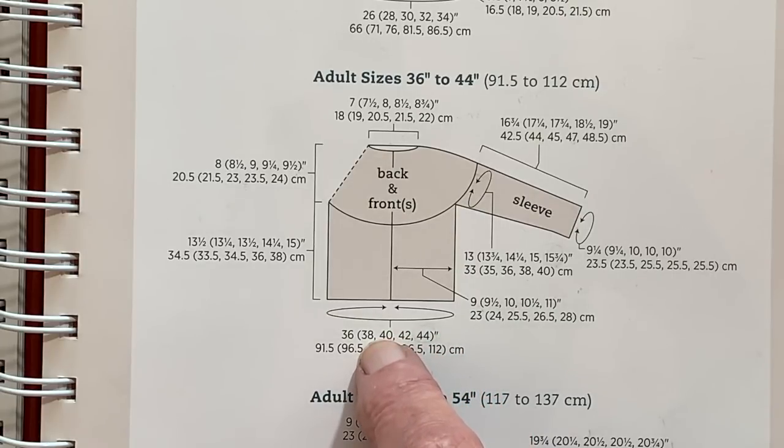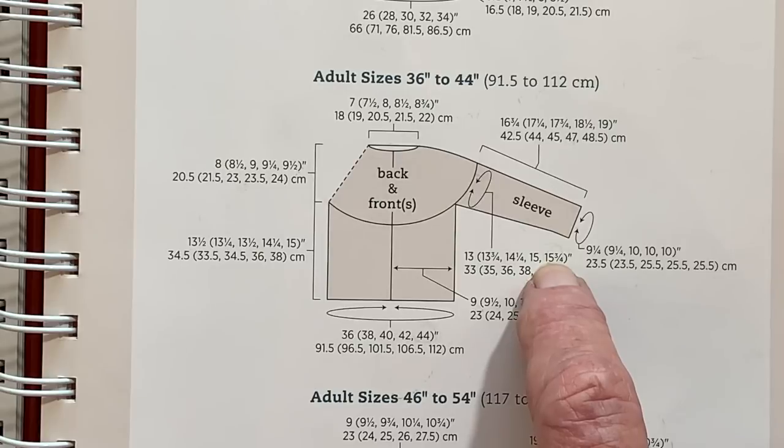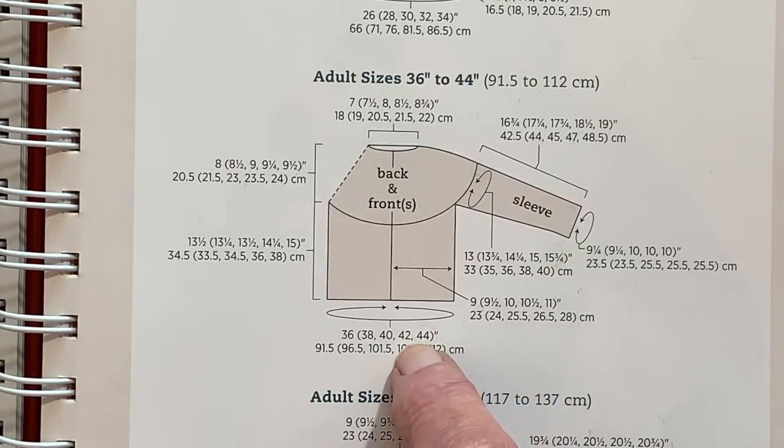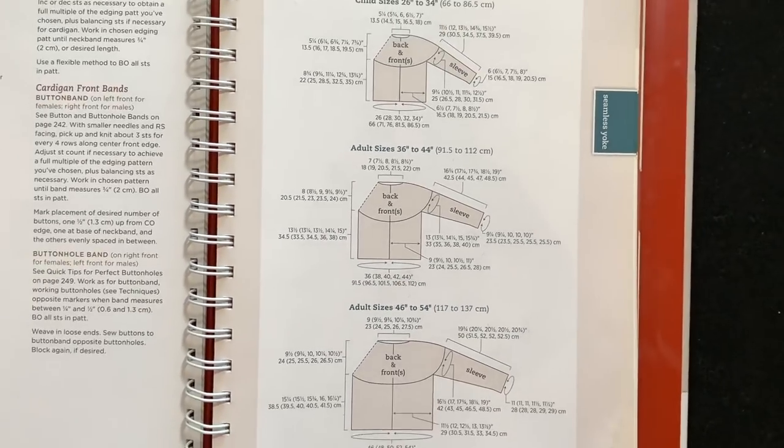So what we want is a sweater body that's the 40 but we want the sleeve to be 15 and 3/4. That 15 and 3/4 corresponds with size 44. So let's go into the book and look at this.